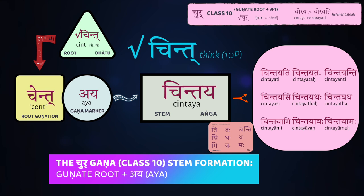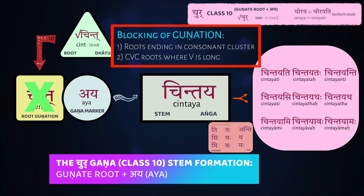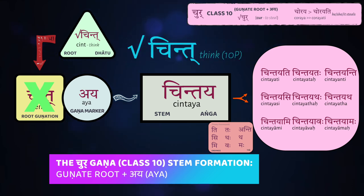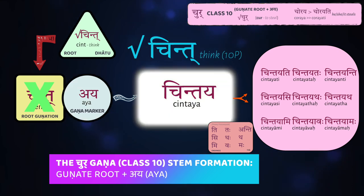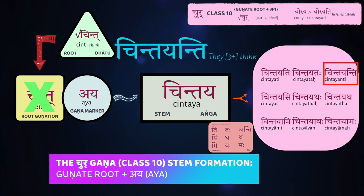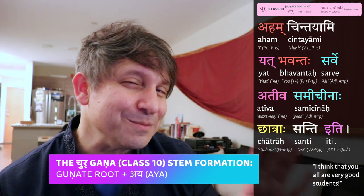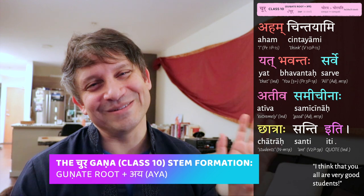A very common tenth class root is chint, meaning to think. For this root, we have to go back to what we talked about with blocking gunation in class one — there are two kinds of roots where gunation gets blocked: one, if it ends in a consonant cluster, and the other if the root is CBC and the vowel is a long vowel. Here, chint ends in the cluster NT, so there's going to be no gunation; it simply stays chint, and then you add aya to get chintaya — chintayati, she thinks, he thinks, it thinks. Te chintayanti — they think. Aham chintayami — I think. I think that you are all very good students.